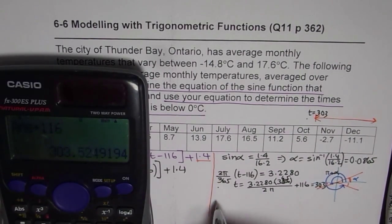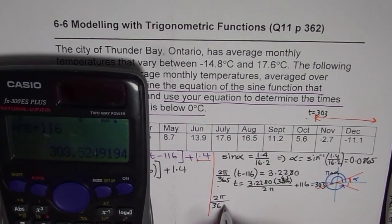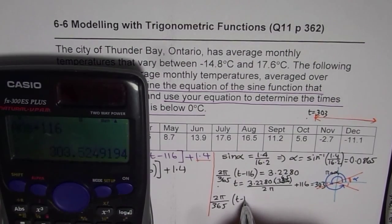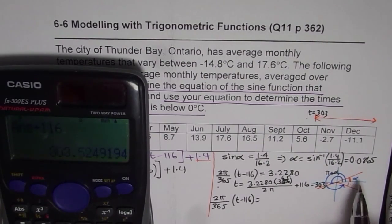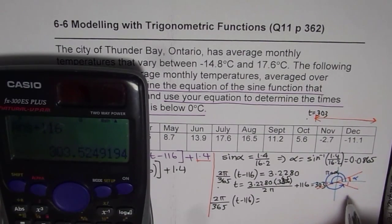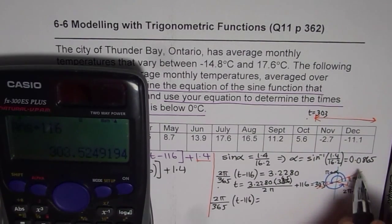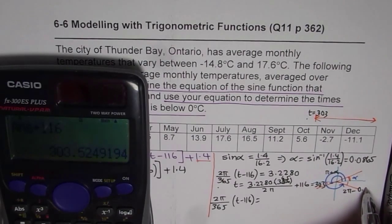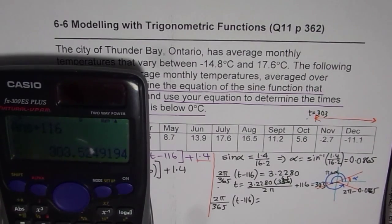The other value we can get as 2 pi over 365 times t minus 116. This time we will add, we will take away alpha from 2 pi. So 2 pi minus 0.0865, let's do that.